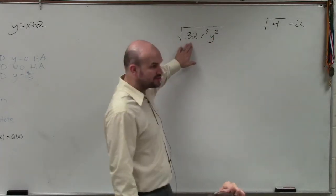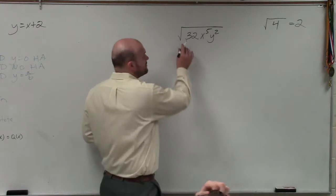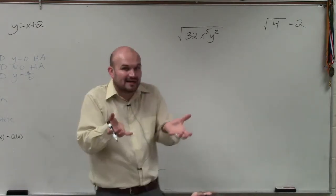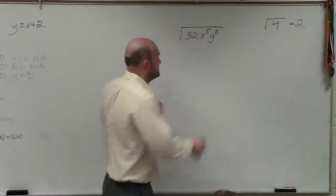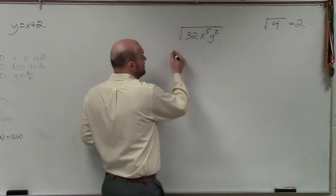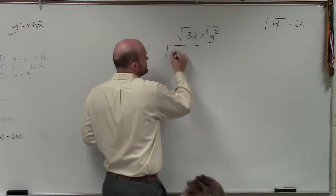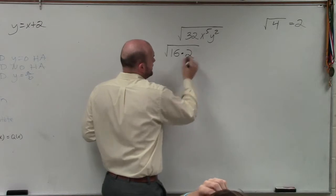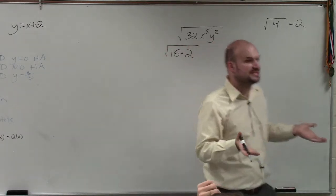So I can't take the square root of 32. However, can I rewrite 32 as a product of a square number and another number? Yes. You can do it 4 times 8, but you always want to choose the largest square number that you can do. So I'm choosing 16 times 2.